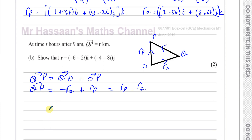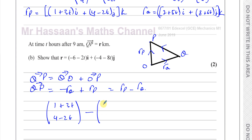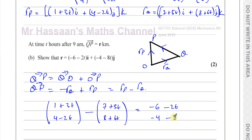Writing in column vector form: rP is (1 + 3T, 4 − 2T) and rQ is (7 + 5T, 8 + 6T). Subtracting gives: top component 1 minus 7 is −6, and 3T minus 5T is −2T. Bottom component: 4 minus 8 is −4, and −2T minus 6T is −8T.